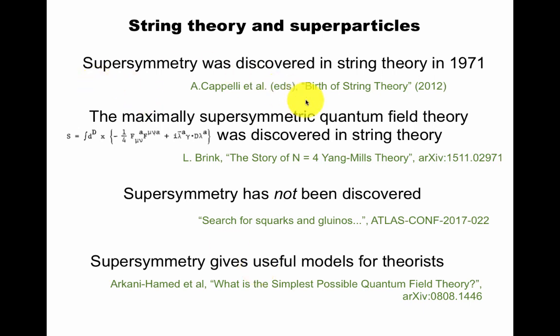String theory and superparticles. Supersymmetry was discovered in string theory in 1971. The maximally supersymmetric quantum field theory, with Lagrangian here, was discovered in string theory, as summarized beautifully here by Lars Brink.